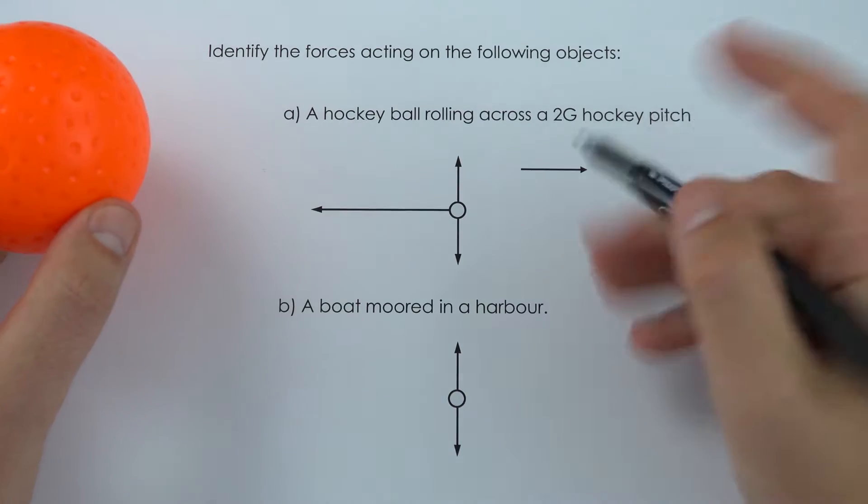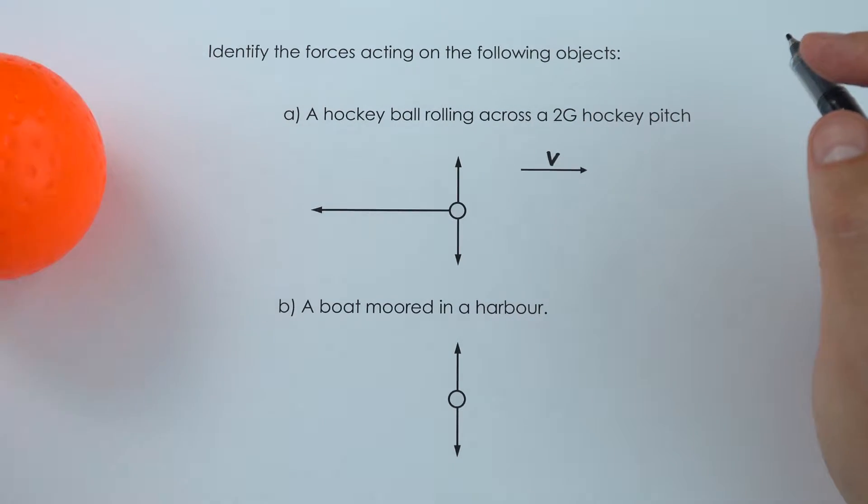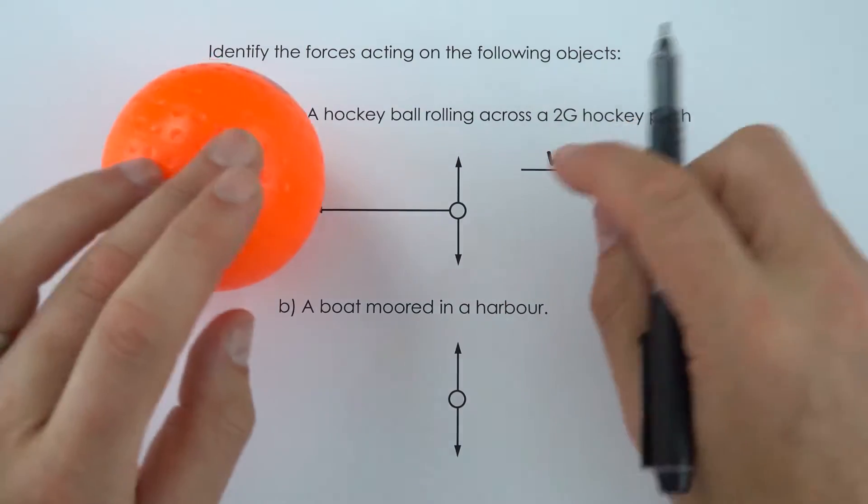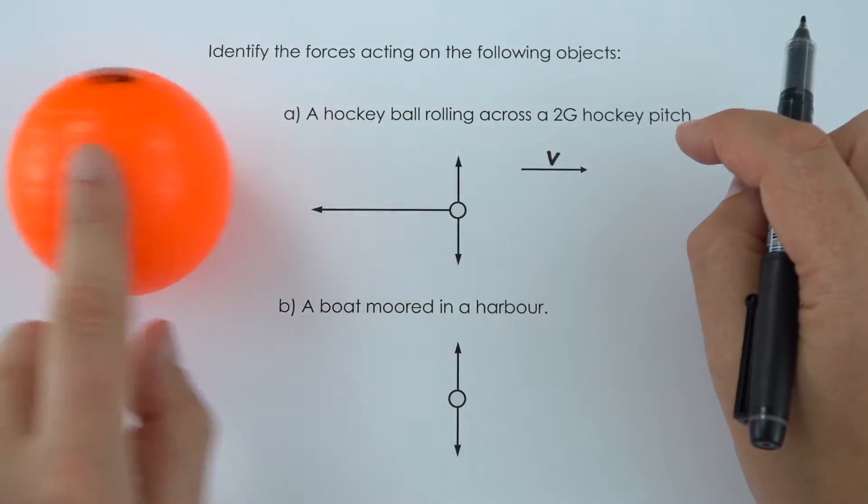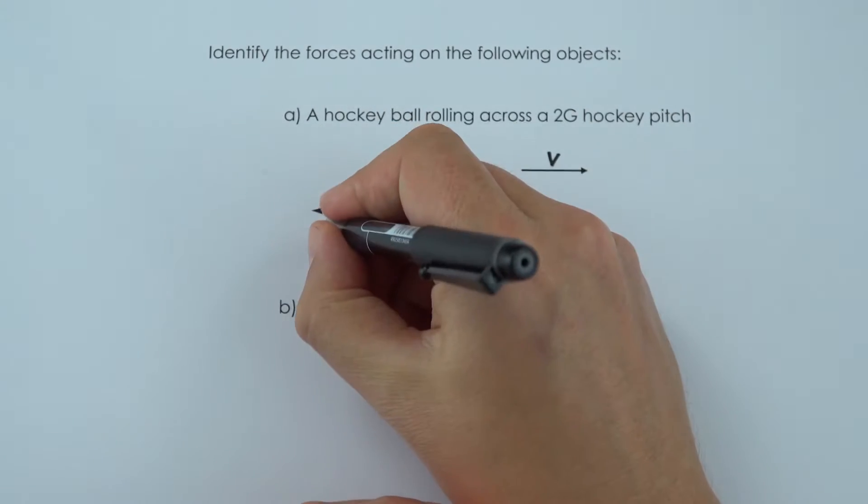Now if it's rolling along, this arrow just shows the velocity of that ball. But once it's rolling there's no driving force keeping it going, instead there's only going to be a force which is slowing it down, which is in the opposite direction to its motion. So if the ball is moving this way there's going to be a friction force acting the other way.